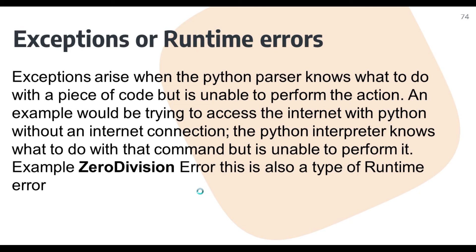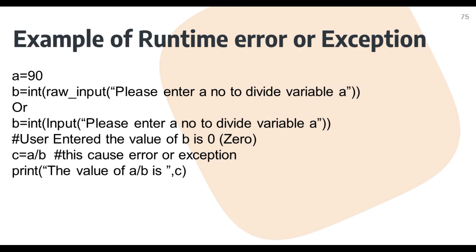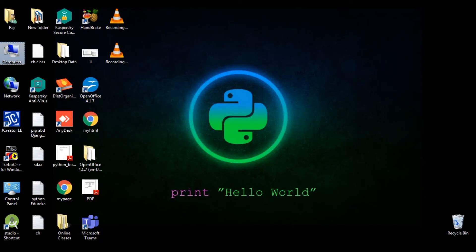Here is an example: variable a equals 90, and the user is asked to enter a value in variable b. If the user enters 2 or 3, that is fine. But if the user enters 0, then the expression c equals a divided by b will cause an error — a zero division error. This message will never print when the error occurs. The program and its earlier execution had no problem, but when the user enters 0, the error is generated at runtime.